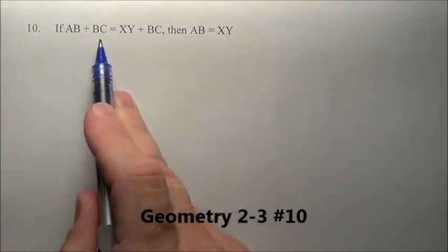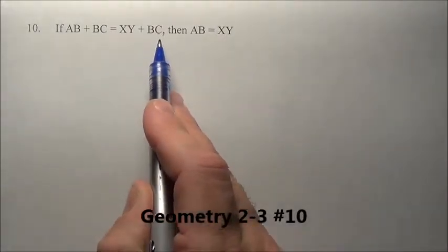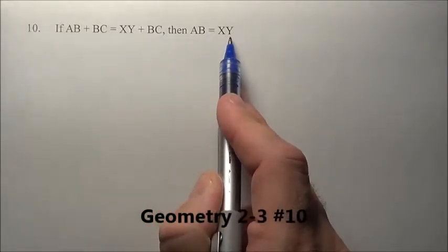Problem 10. It says if AB plus BC is equal to XY plus BC, then AB is simply just equal to XY.